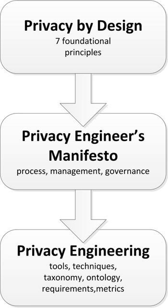Definition and scope. The definition of privacy engineering given by the National Institute of Standards and Technology focuses on providing guidance that can be used to decrease privacy risks, and enable organizations to make purposeful decisions about resource allocation and effective implementation of controls in information systems.